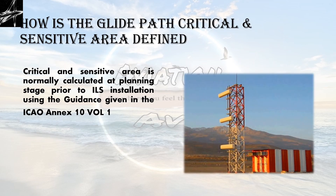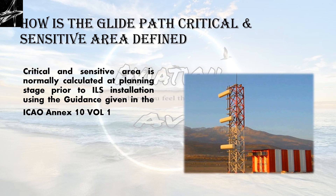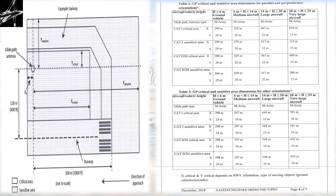The objective of defining critical and sensitive areas is to prevent signal degradation and ensure that the aircraft can rely on the signals in space. According to ICAO Annex 10 Volume 1, the critical and sensitive area is calculated at the planning stage prior to installation of the ILS. We have a diagram as well as a table defining the area.